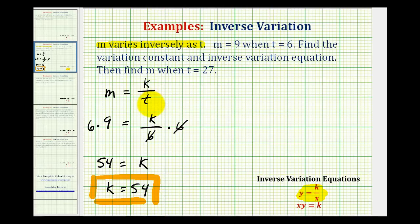Notice how what we did to solve for k is multiply both sides of the equation by t. If we look down into our variation equations, notice how we're given x times y equals k. So to apply this here, we could have just found the product of m and t.